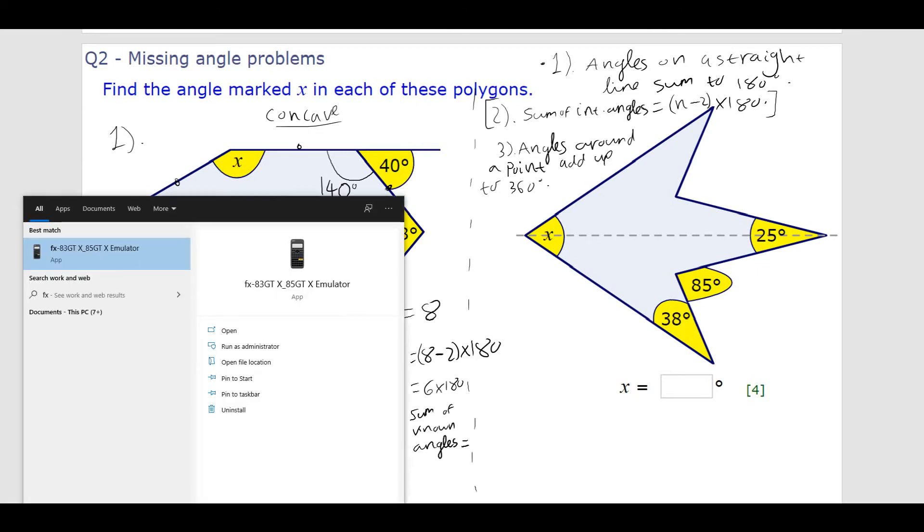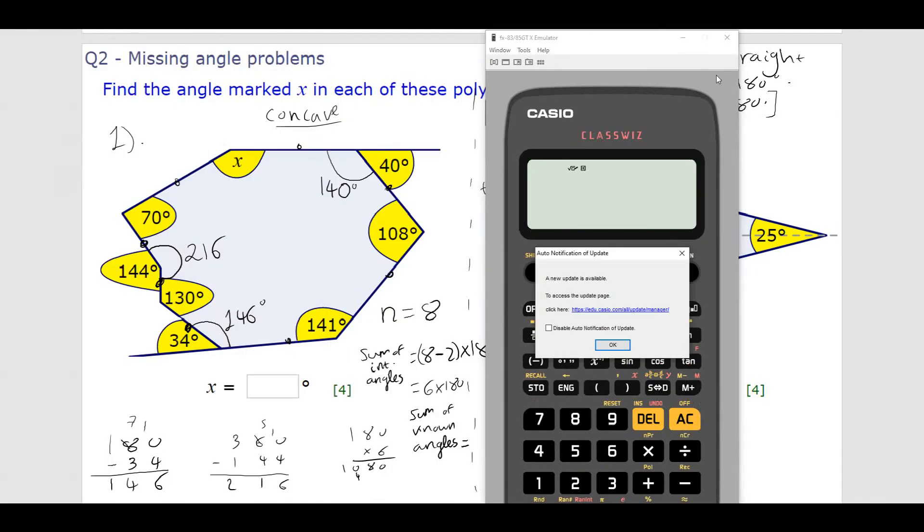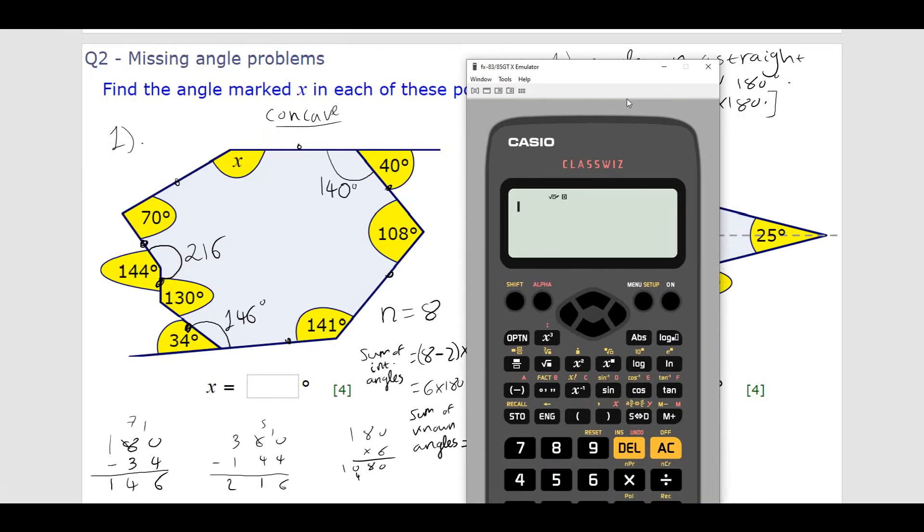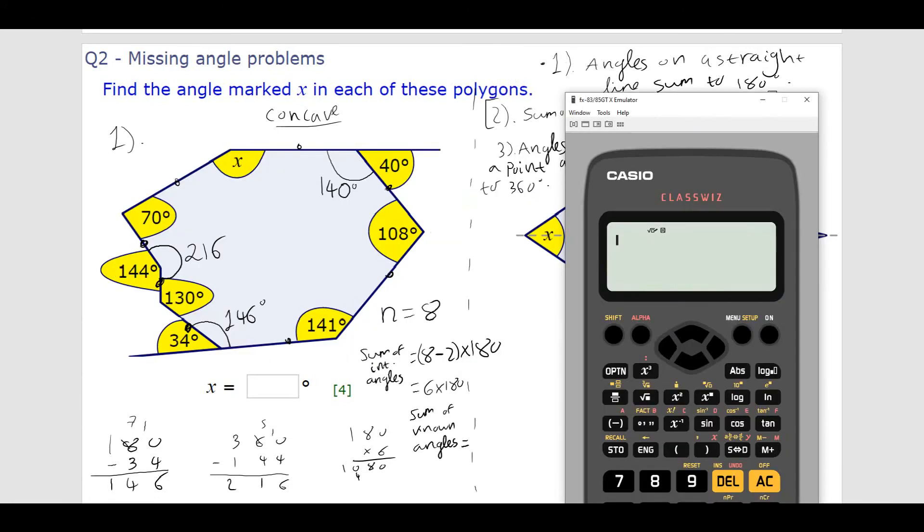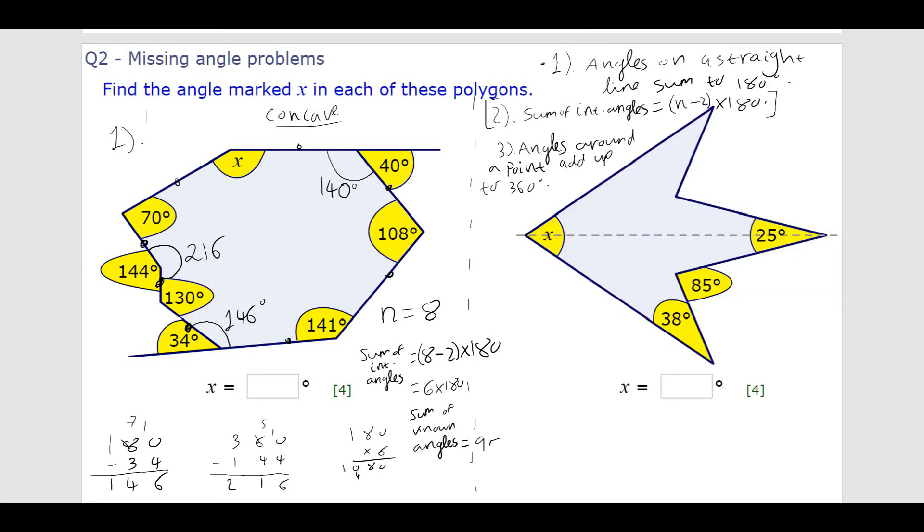I'm just going to get my calculator on the screen. So, just because it'll be a bit quicker. So, 70, I don't want to update it. So, I don't know if it's actually going to work. Right. So, I'm going to go anti-clockwise. So, 70 plus 216 plus 130 plus 146 plus 141 plus 108 plus 140. That leaves me with 951. So, the sum of known angles is 951.